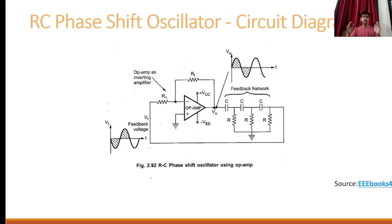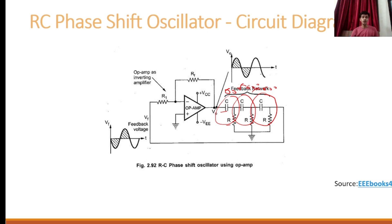In the RC phase shift oscillator, we need to create a 180 degree phase shift in the feedback path. Here you can see we have the combination of C and R — this is the first section, this is the next section, and this is the third section. Each section provides a phase shift of 60 degrees, plus 60 degrees, plus 60 degrees. The sum of all sections equals 180 degrees. This is the inverting amplifier.